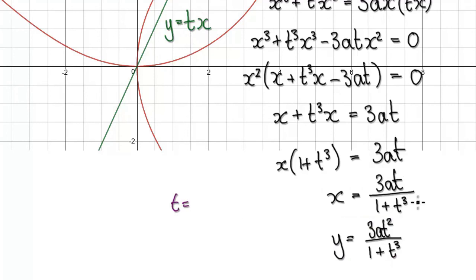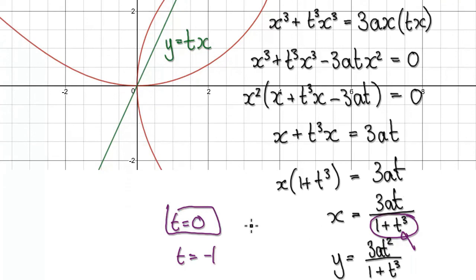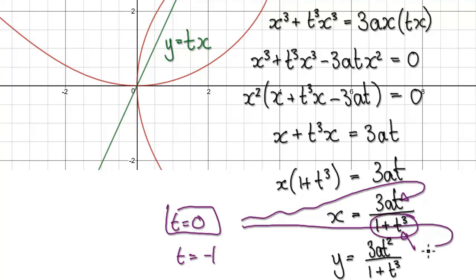Looking at this, T breaks down when T is negative 1 — so when T is negative 1 it breaks down. But we are using a straight line to come up with our parametric equations, and for the straight line to exist T cannot be 0. However, our parametric equations will still work when T is 0, so even though the straight line breaks down, it still makes sense for T equals 0.